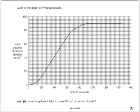Here's an exam question where you're asked to read off a graph. Look at the graph of Viviana's results. How long did it take to make 50 cubic centimetres of carbon dioxide? Well, that's the scale on the left hand side, so 50 would be halfway between 40 and 60. Reading across and then off the line and reading down, that would give us a time of 46 seconds.